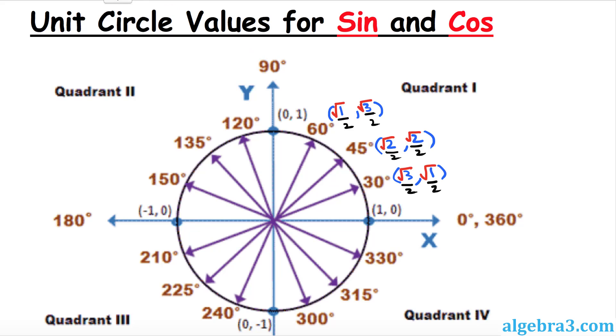Now we are going to simplify these numbers. 1 with the square root is same as 1, so this could be written as 1 over 2 comma square root of 3 over 2. This is same as square root of 2 over 2 and square root of 2 over 2. And finally, this is square root of 3 over 2 comma 1 over 2.